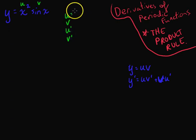Now the u is x squared. The v is sine x. Now u dash is the derivative of x squared, which is 2x. And finally v dash is the derivative of sine x, which is cos x.